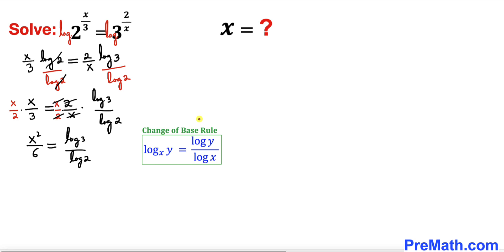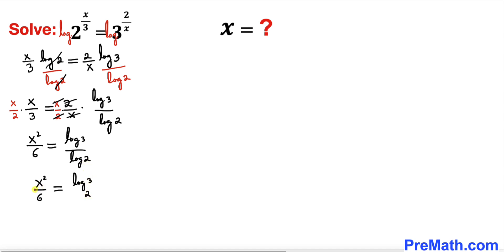Now let's recall the change of base rule. The right hand side becomes log of 3 with base 2. Then we multiply both sides by 6 to isolate x squared — the 6's cancel on the left — so we get x squared equal to 6 times log base 2 of 3.